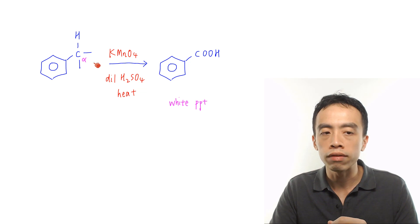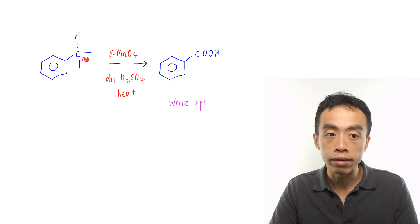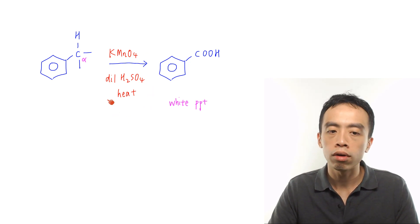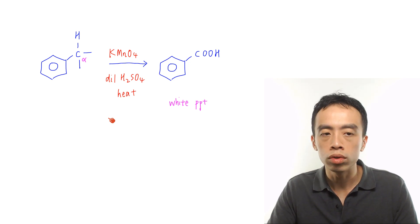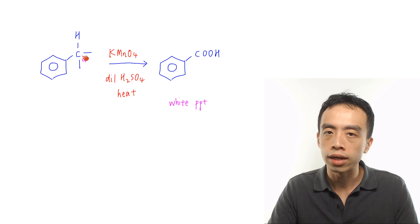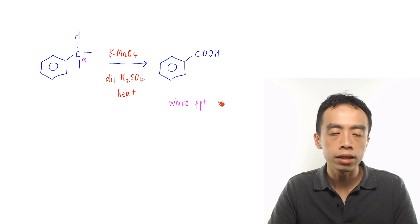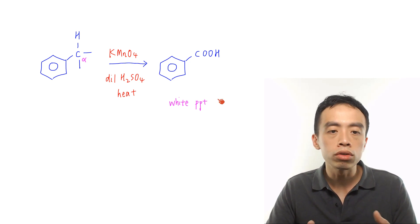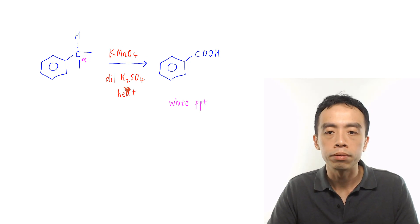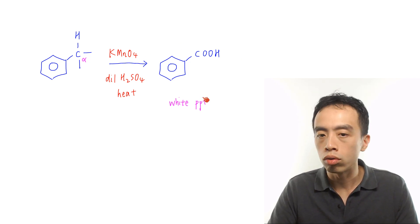The criteria for the alkyl benzene to undergo oxidation is that the alpha carbon just needs to have at least one hydrogen. As long as the alpha carbon has one hydrogen, then on oxidation using KMnO4, dilute H2SO4, heat or heat under reflux, the rest of the bonds attached to that carbon will break, and the carbon will be oxidized to an acid functional group, giving benzoic acid. In terms of observation, we expect purple KMnO4 to decolorize, and benzoic acid, being insoluble in water, will appear as a white precipitate.